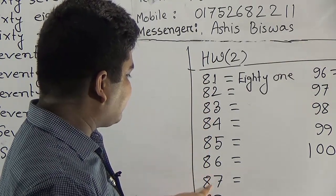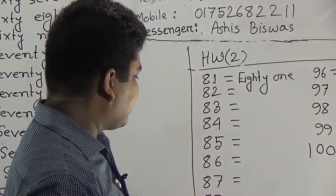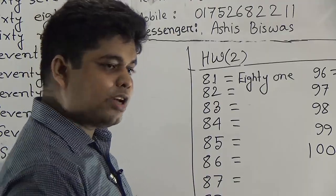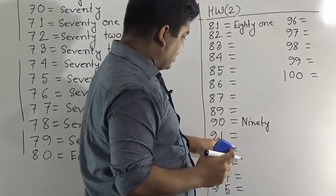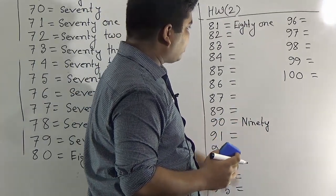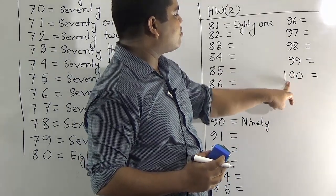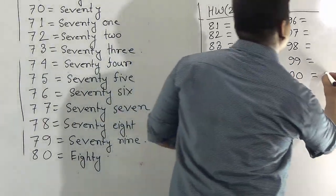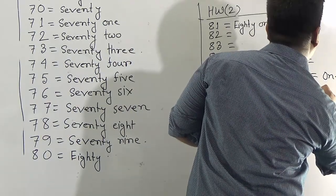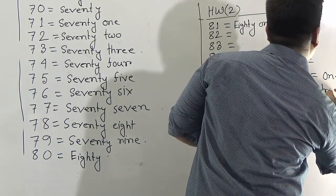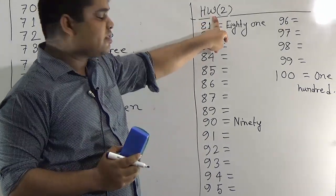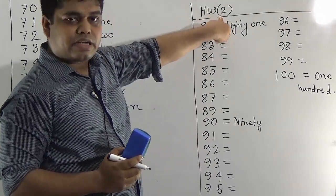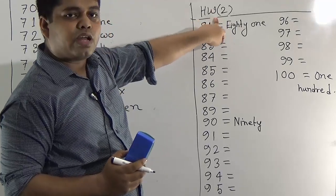And 90 — what is the spelling of 90? The spelling of 90 is N-I-N-E-T-Y. Use the spelling of 90 to write the numbers from 91 to 99. And our last number is 100. 100 is ONE HUNDRED: O-N-E, H-U-N-D-R-E-D. I hope you have understood what will be your homework number 2.